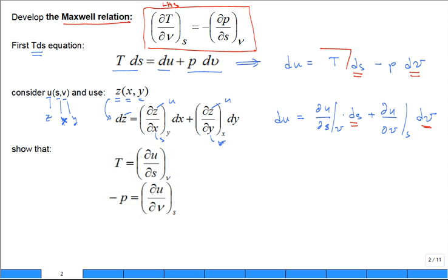And we find that T equals the partial of U with respect to S holding V constant, and minus P equals the partial of U with respect to V holding S constant. Now go one step further. Now that these relationships are established, how do we develop this Maxwell relation right here?